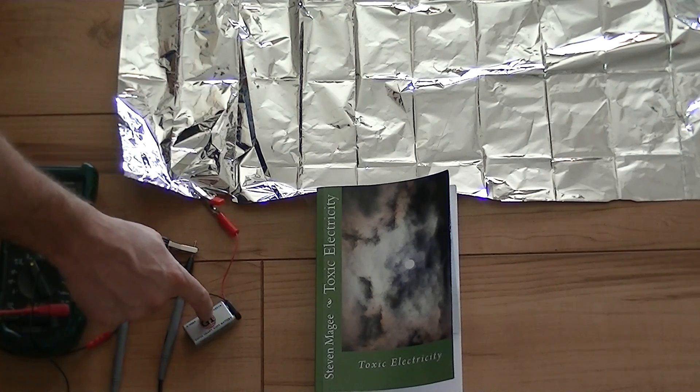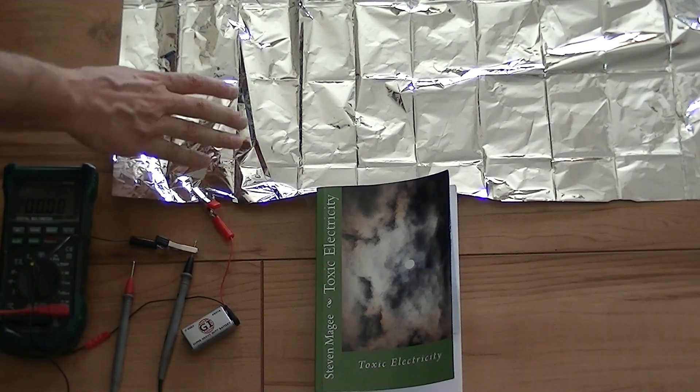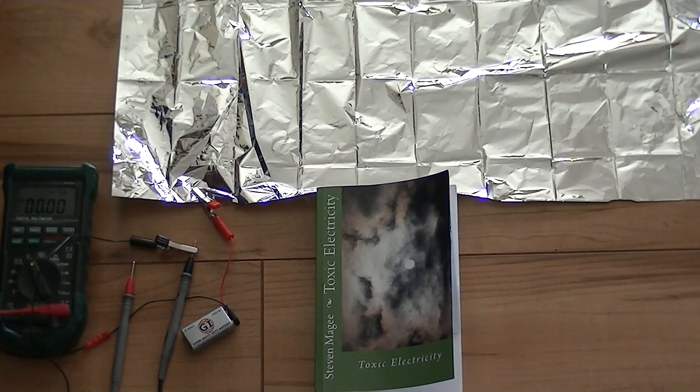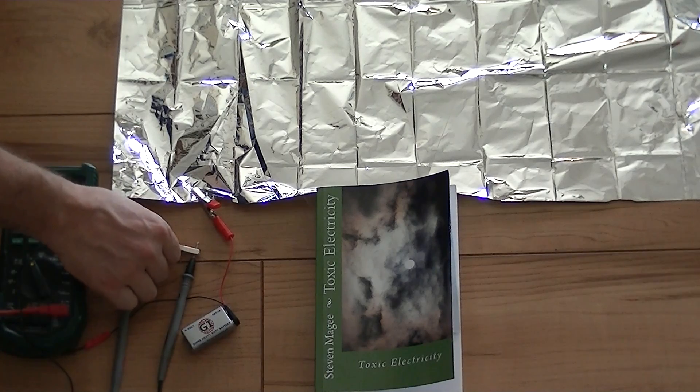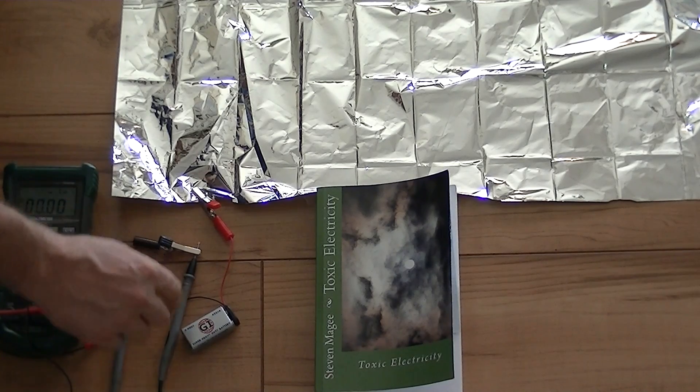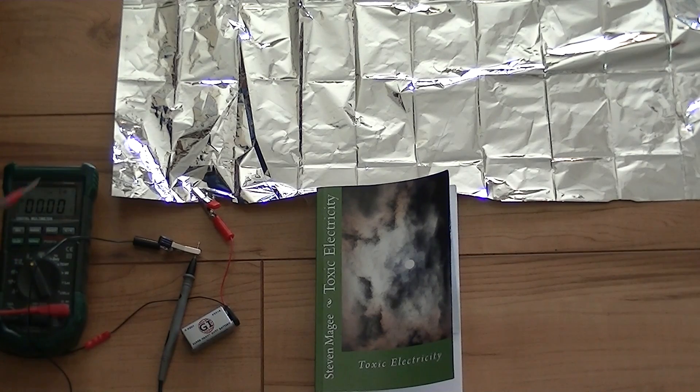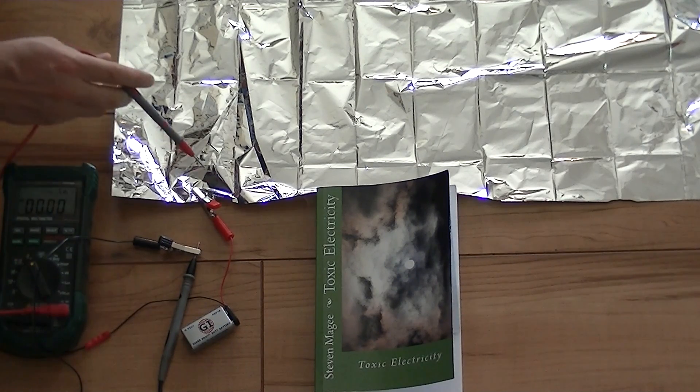We have a 9-volt battery right here. The positive is connected onto the foil surface—this is the conductive surface that is up. We have the negative of the battery connected to the negative of our probe, and we're on volts DC. We're going to use the positive probe to see what's going on on the foil.